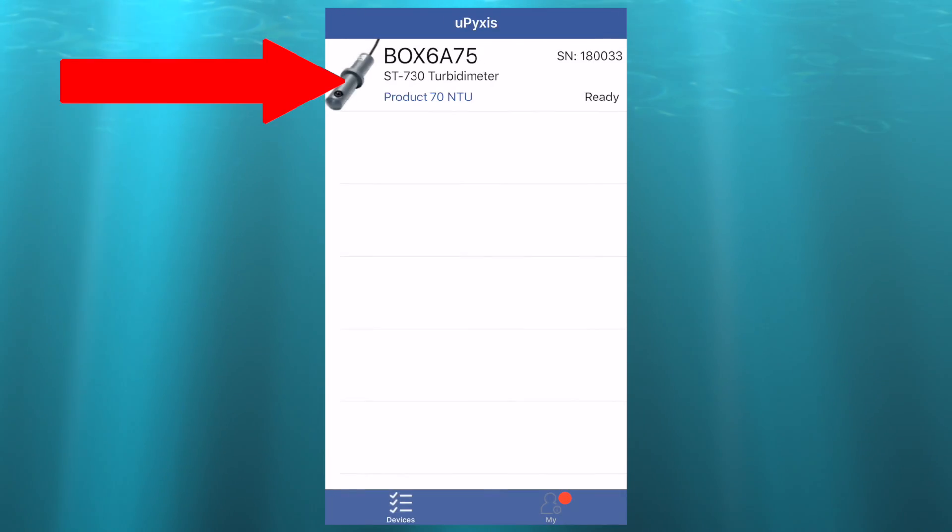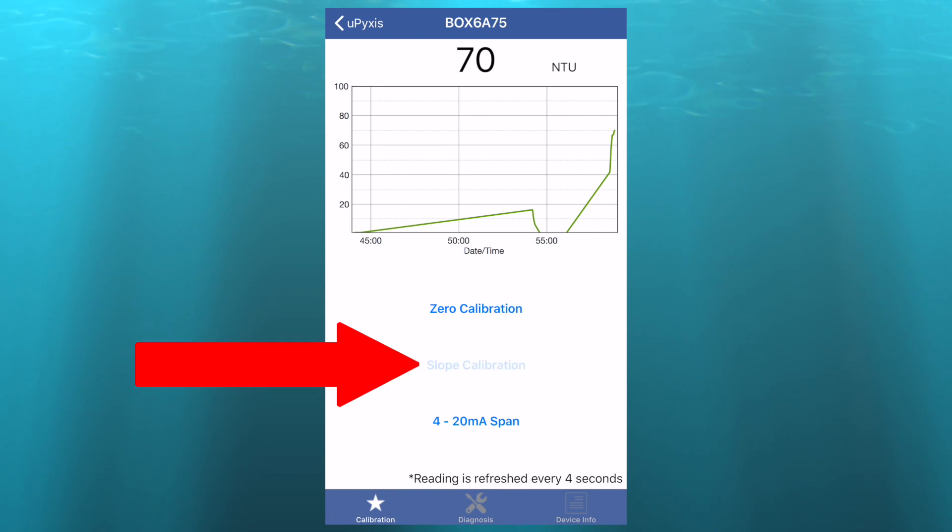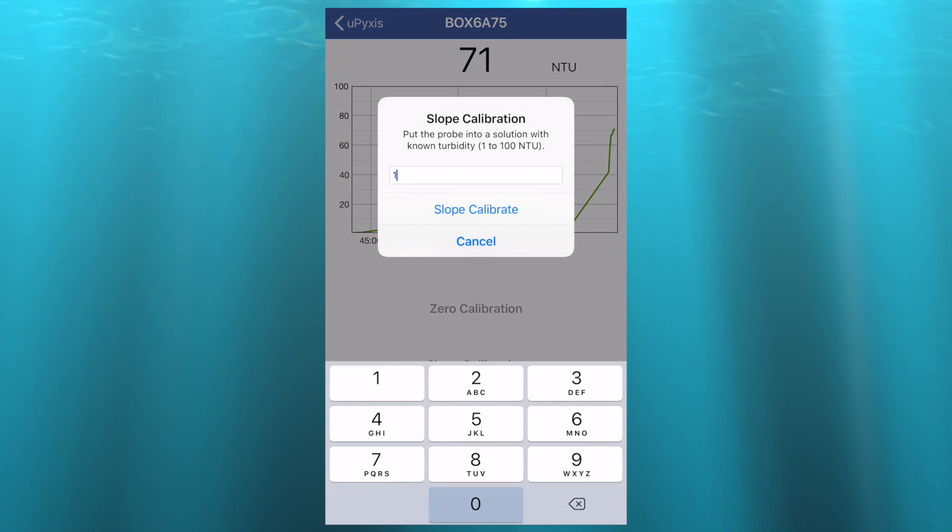Then, on the uPixis app, select the ST730 and then select Slope Calibration. Enter in 100 and select Slope Calibrate.